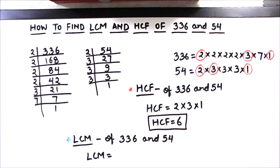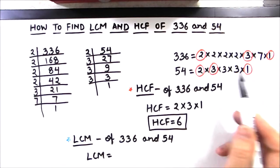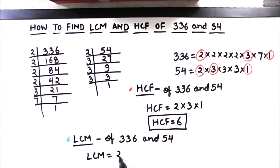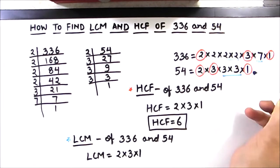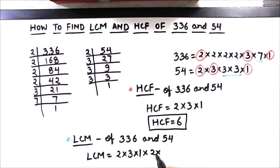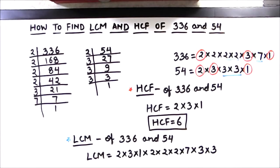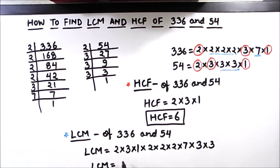To find the LCM, we take the product of all common numbers only once — that is 2 × 3 × 1 — and then multiply by the remaining leftover numbers. From 336 the remaining factors are 2 × 2 × 2 × 7, and from 54 the remaining factors are 3 × 3. By multiplying all these numbers, we get the LCM as 3024.